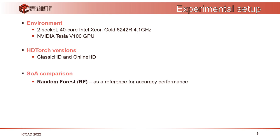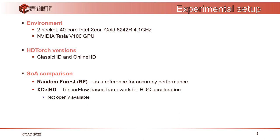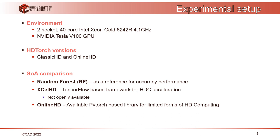We had three algorithms as state-of-the-art comparison: random forest as a reference for accuracy, ExcelHD which is a TensorFlow-based framework for HDC acceleration (though it is not openly available, so we could only compare accuracy numbers from their paper), and the original online HD implementation in PyTorch.